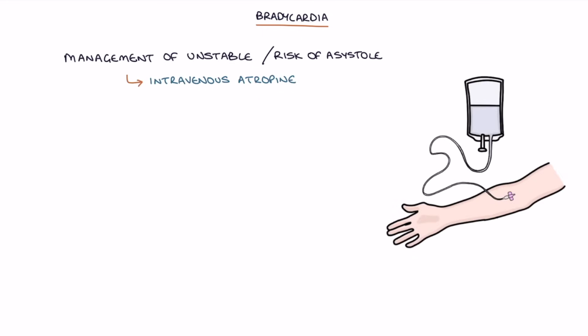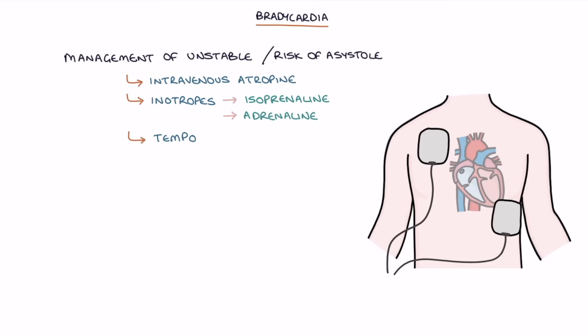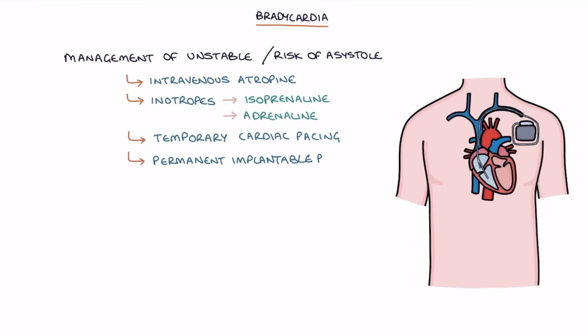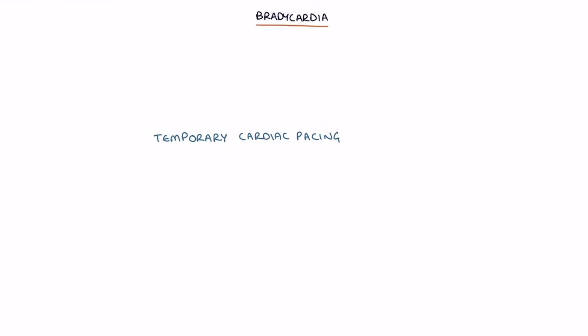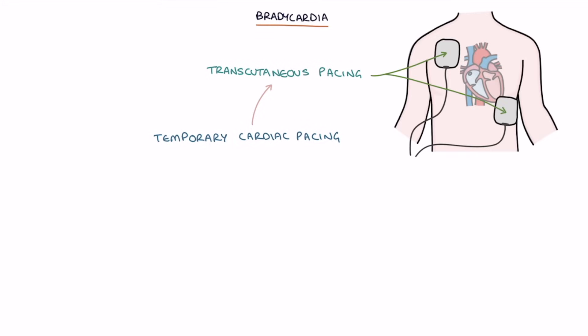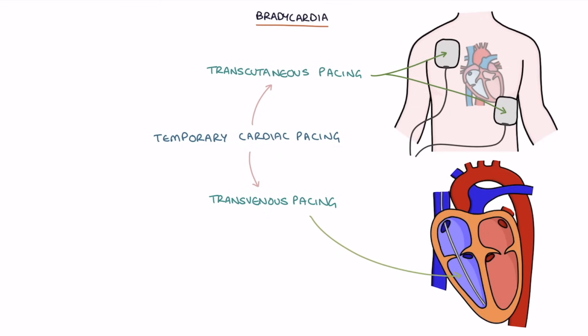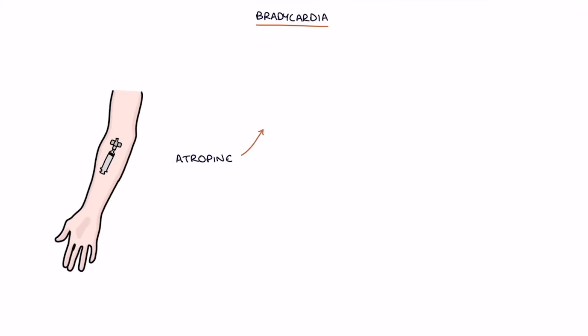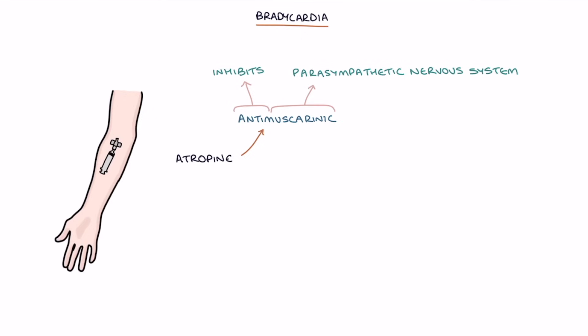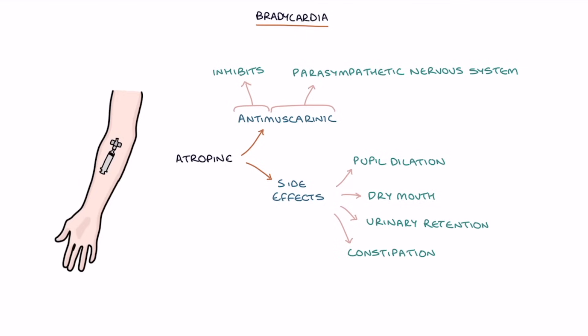Management of unstable patients and those at risk of asystole involves intravenous atropine first line, then inotropes such as isoprenaline or adrenaline, temporary cardiac pacing, and a permanent implantable pacemaker when available. Options for temporary pacing include transcutaneous pacing using pads on the chest, and transvenous pacing using a catheter through the venous system. Atropine increases heart rate by acting as an anti-muscarinic medication, inhibiting the parasympathetic nervous system, with side effects including pupil dilation, dry mouth, urinary retention, and constipation.